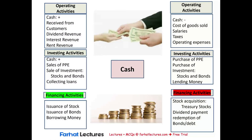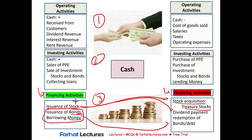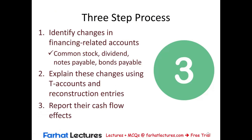The financing section is the third section. Operating was the first, investing was the second, and financing is the third. How does the company finance itself? By issuing stocks or bonds — forms of borrowing. These are positive cash flows. The opposite is buying back your own stock (treasury stock) — a negative cash outflow. Interest on loans is part of operating activities. We're going to use a three-step process in the financing section.